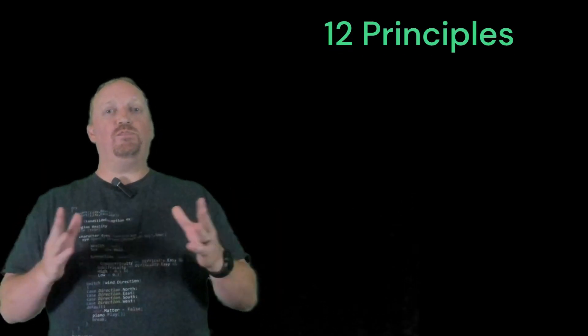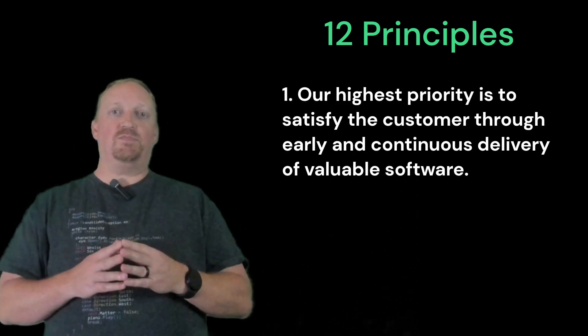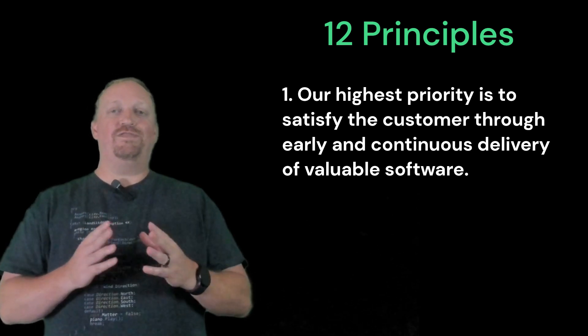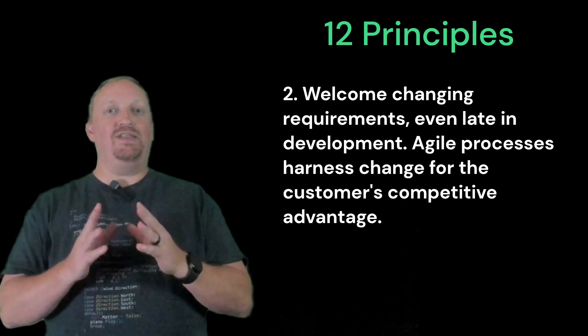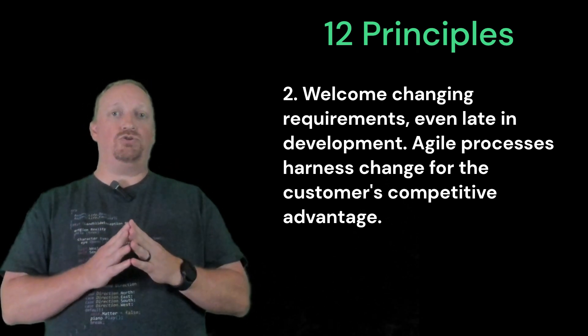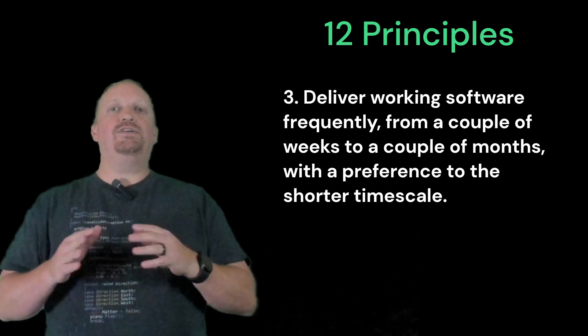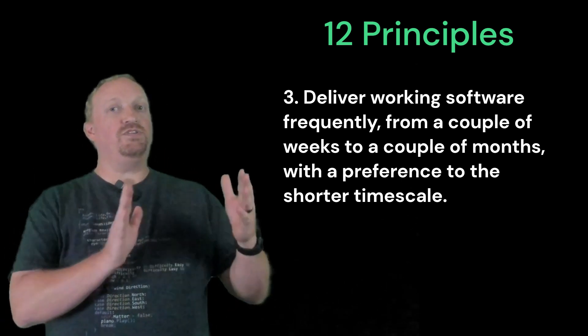Now that you know the four values of agile software development, let's quickly list off the 12 principles. Each principle has its root in one or more of the four values. Number one: our highest priority is to satisfy the customer through early and continuous delivery of valuable software. Number two: welcome changing requirements even late in development — agile processes harness change for the customer's competitive advantage. Number three: deliver working software frequently, from a couple of weeks to a couple of months, with preference towards the shorter timescales.